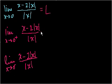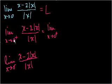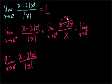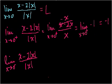As x approaches 0 from the positive side, x is positive, so we can drop the absolute value signs and get x minus 2x over x. That simplifies to minus x over x, which equals minus 1. So the limit as x approaches 0 from the positive side equals minus 1.